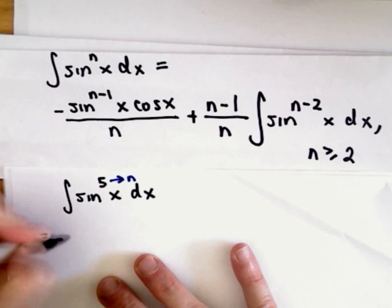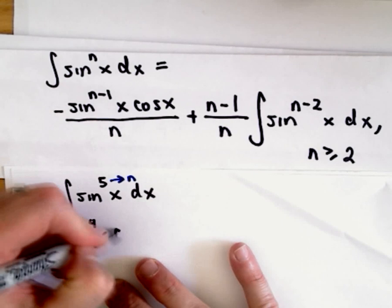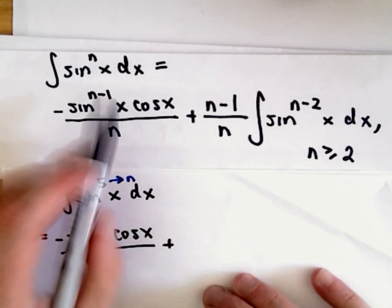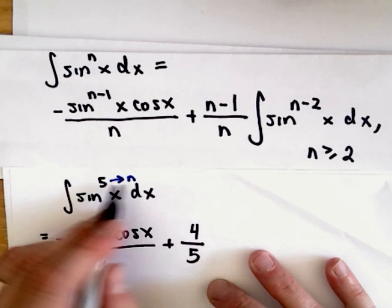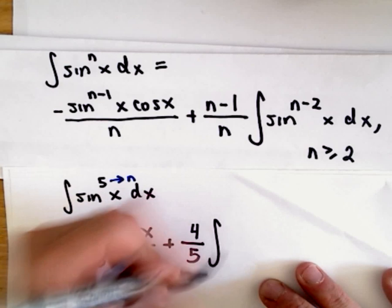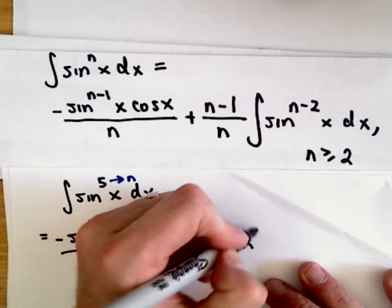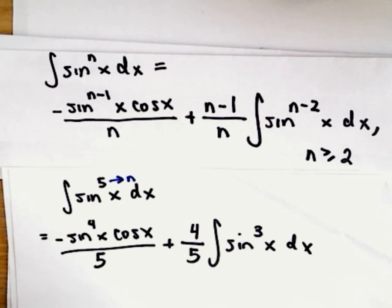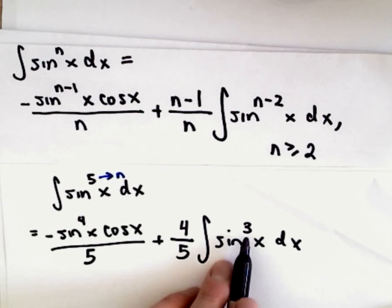So it says we'll have negative sine of, well, 5 minus 1 will give us the power 4, x times cosine x, all over n which in this case is 5. Plus, well if we take 5 minus 1 that's going to give us 4 divided by n which again is 5. And then we're integrating sine of, well, we've got 5 minus 2, which is just going to give us the power of 3, x dx. This is why it's called a reduction formula, because we've went from a power of 5, now we've got an integral involving sine and now it's only raised to the power of 3.